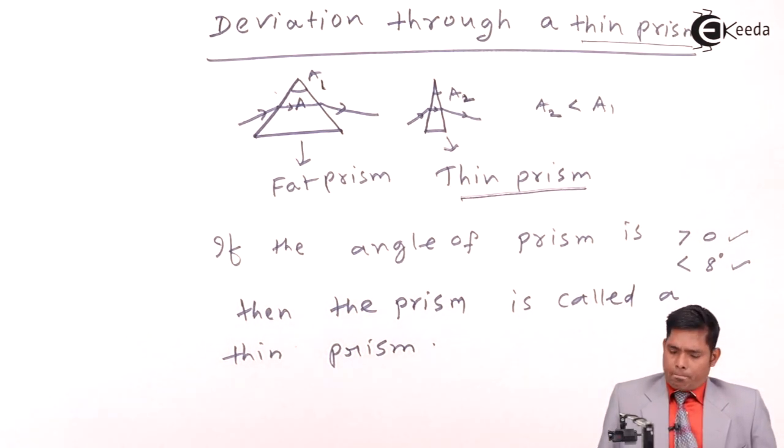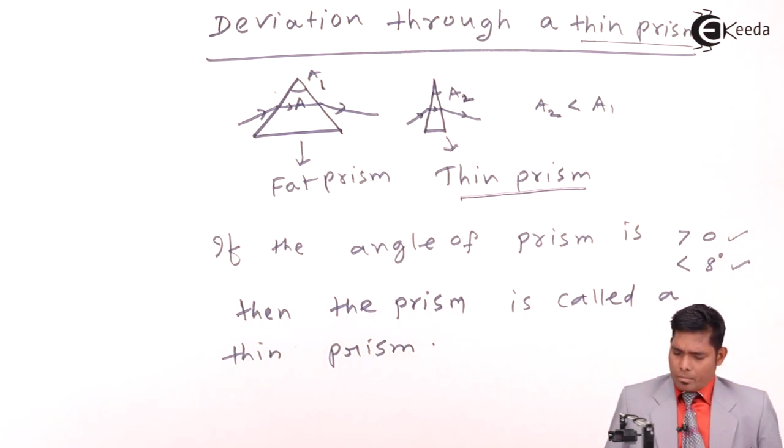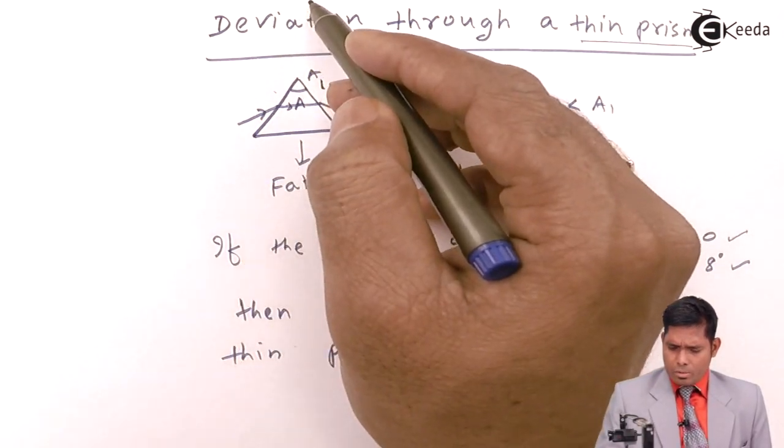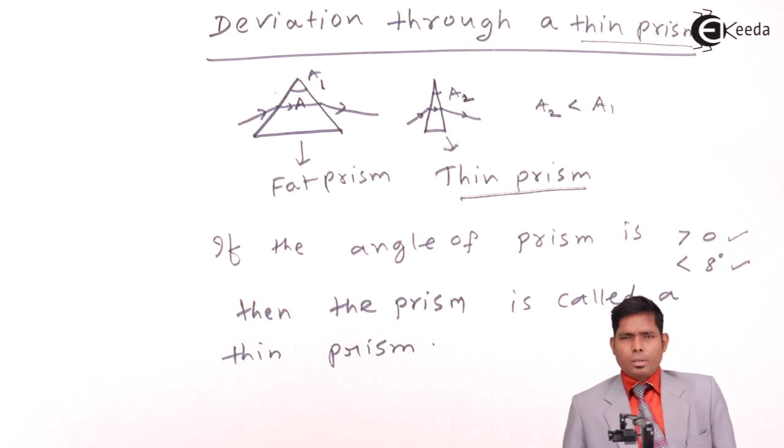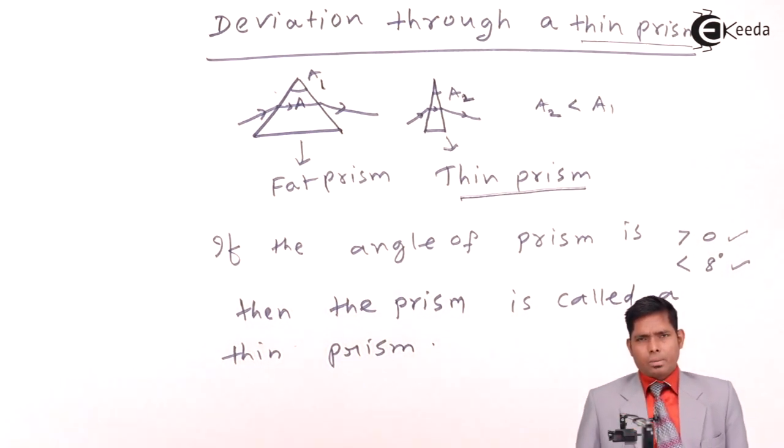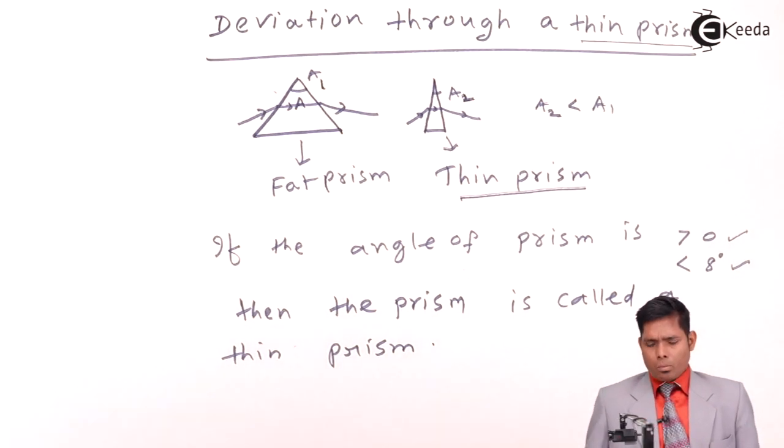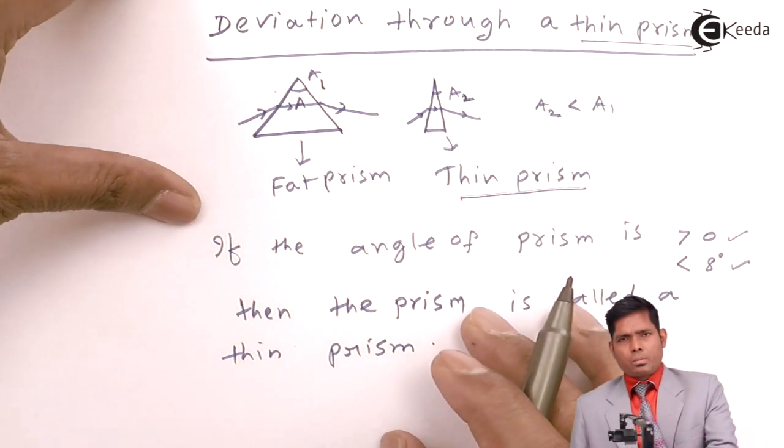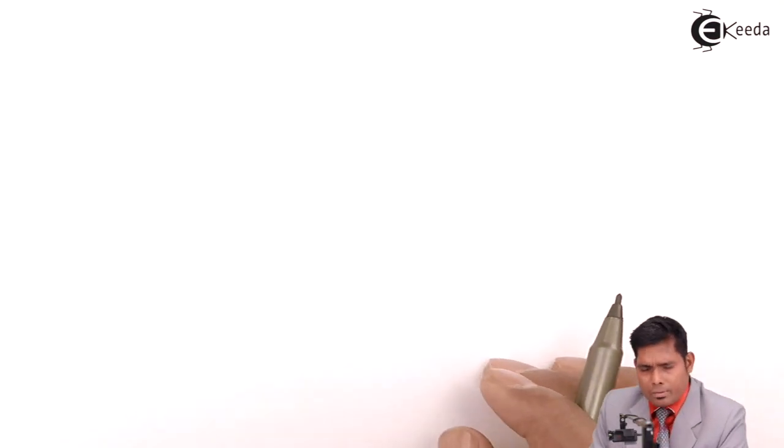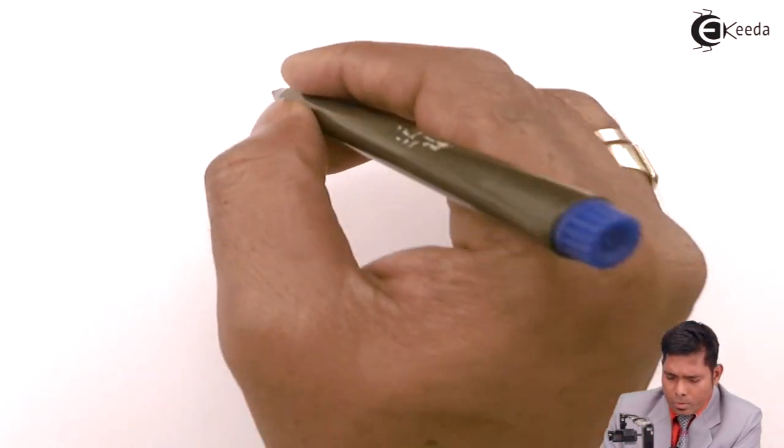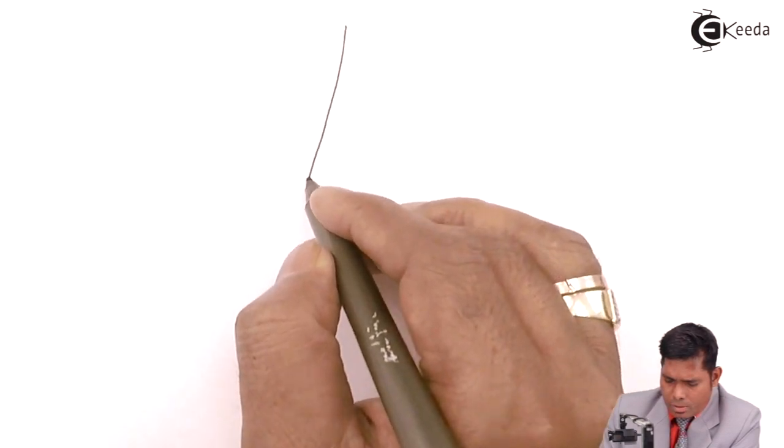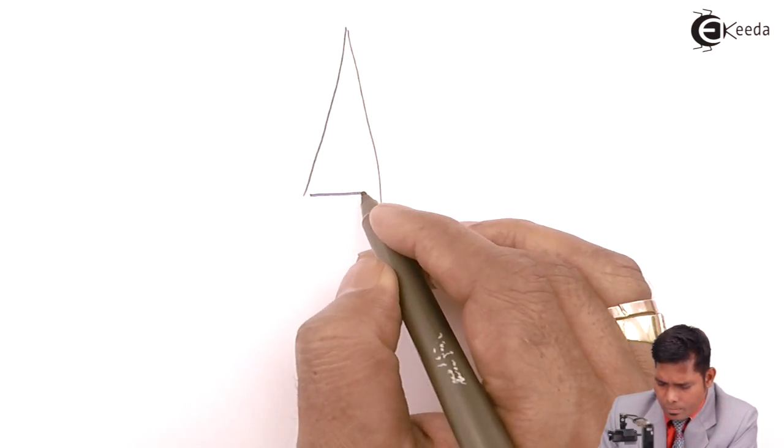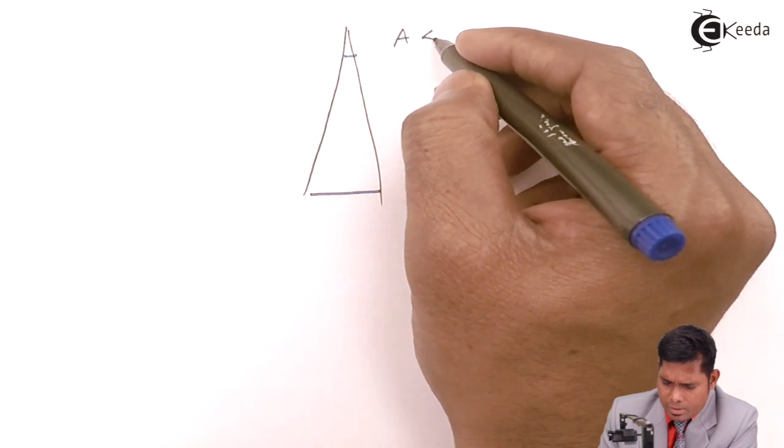You can have deviation through a thin prism. In that case, if you apply a prism formula to such type of prism, then just a little bit of modification in the formula for refractivity or refractive index. So, in case of a thin prism like this, this angle is less than 8 degrees.